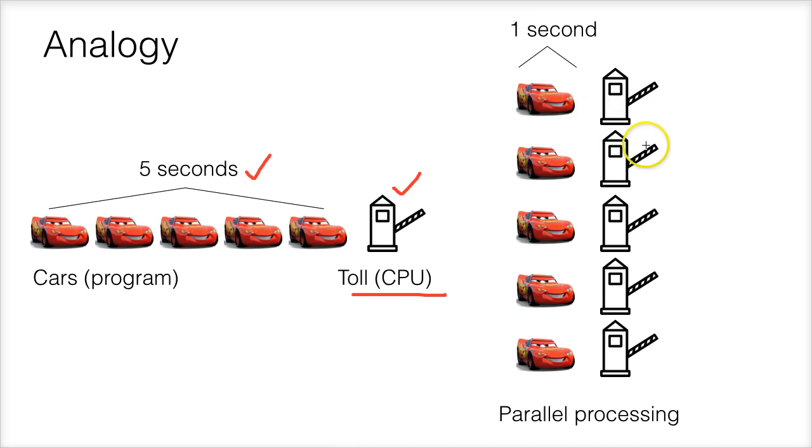But what if we have five tolls working together? One, two, three, four, five tolls altogether. Then the five cars can be arranged in a parallel manner. And since each car needs one second to pass through the toll, it will take about one second to process the requirement of the five cars.